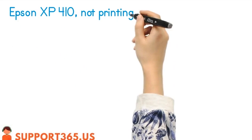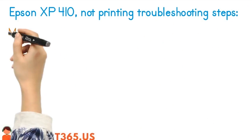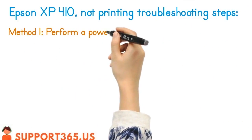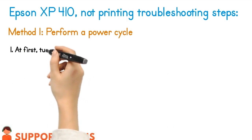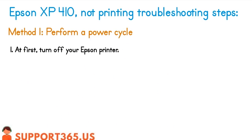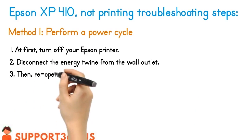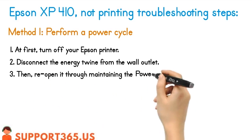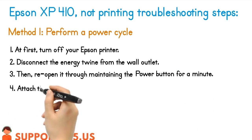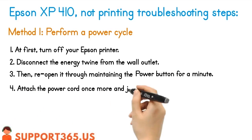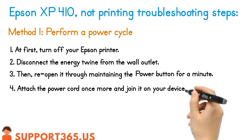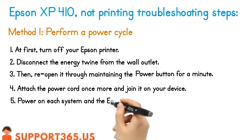Epson XB410 Not Printing Troubleshooting Steps - Method 1: Perform a power cycle. First, turn off your Epson printer. Disconnect the power cord from the wall outlet. Then, reopen it by holding the power button for a minute. Attach the power cord once more and connect it to your device. Power on both the system and the Epson printer.